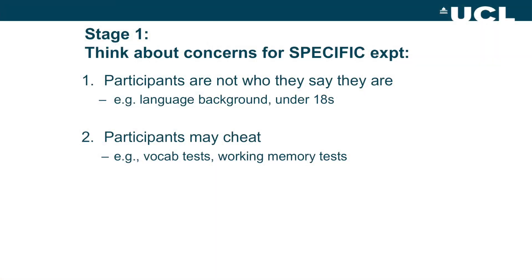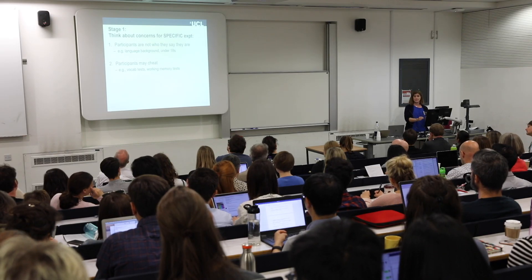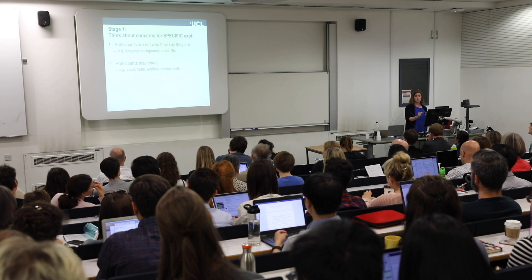The second concern is that participants cheat — deliberately not following instructions in a way that breaks the rules of your experiment. For most experiments I run you can't really cheat, but for some tasks it's clearly possible. If you're giving a vocabulary test, people can look things up online, especially if they think they'll be excluded for not being native English speakers. Similarly for working memory tasks — can participants write things down? These are experiment-specific questions: is there actually a way somebody could cheat in your particular study?